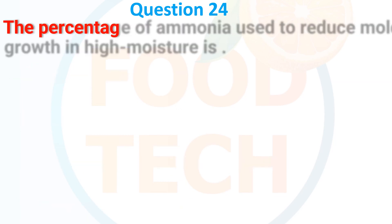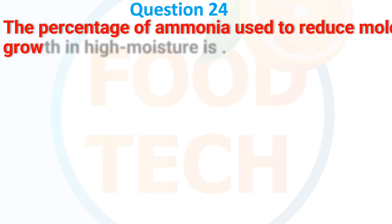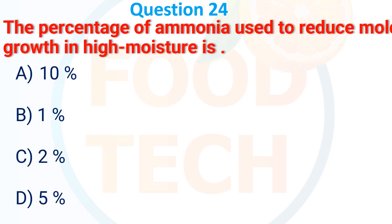The percent of ammonia used to reduce growth in high moisture content is: A, 10%; B, 1%; C, 2%; D, 5%. The answer is C, 2%.